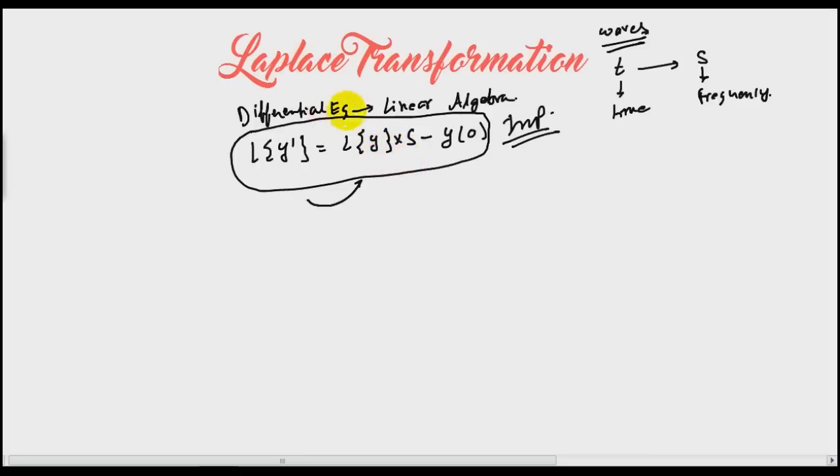I will explain with one example. Let's say I have a partial differential y double bar plus 10y bar plus 12y equals 0. And boundary conditions are y0 is 2 and y bar 0 is 5. This is given. And I want to solve this differential equation using Laplace transformation.